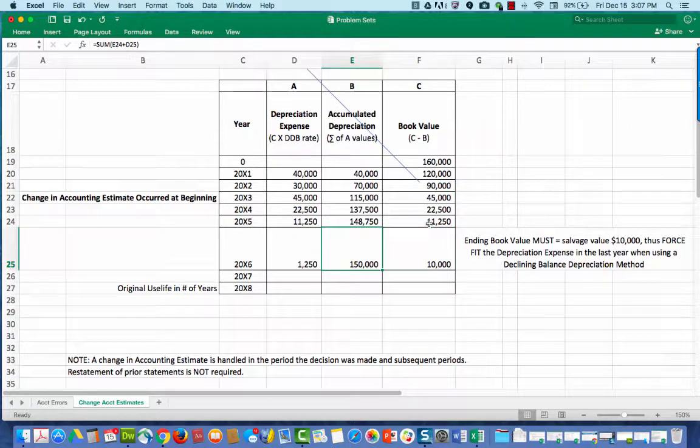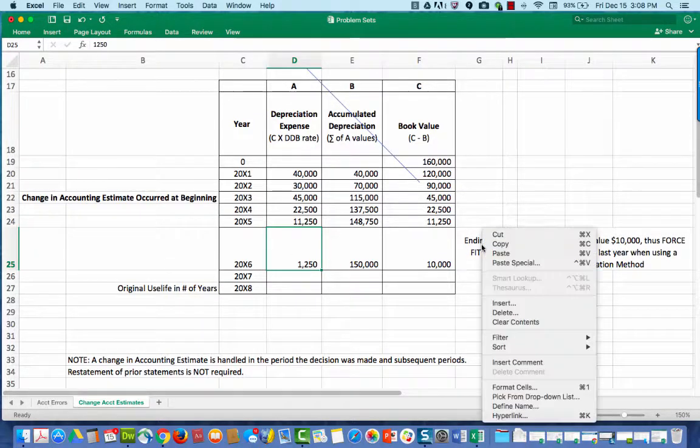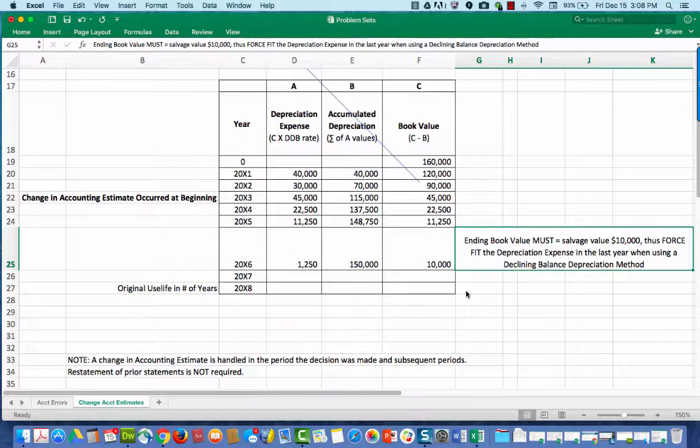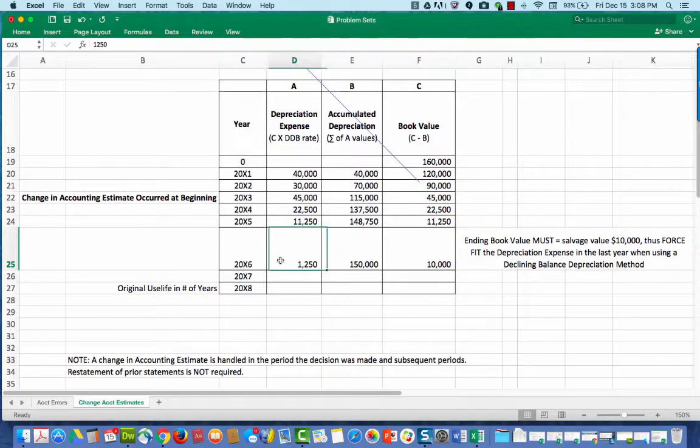So in order to force this to be 10,000, I plug that number in. $10,000, no formula. Everything else in this column is computed using a formula. But when I get to the final year, I plug in my $10,000. In order to do so, I look at the previous book value in the previous year, it's $11,250. So I realized that I need to subtract $1,250 out. So I'm going to make the depreciation expense in the final year $1,250. In other words, I force fit. The ending book value must equal the salvage value. Thus, force fit the depreciation expense in the last year when using the declining balance depreciation method.